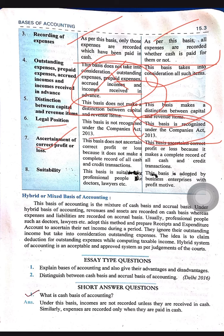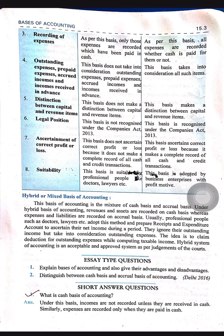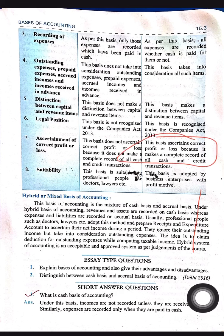Regarding ascertainment of correct profit or loss: cash basis does not give us the correct scenario or the correct profit and loss situation of the business. But accrual basis gives us the correct and exact situation of the profit and loss of the firm.